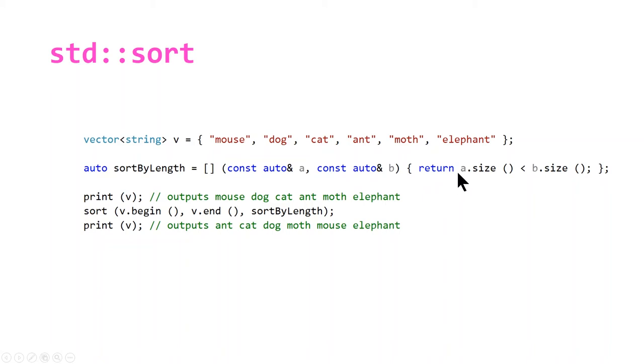By sorting based on size, it's going to sort from the smallest string in terms of length to the largest. We're still outputting mouse, dog, cat, ant, moth, and elephant at the beginning. But after sorting using this lambda expression, it outputs ant, cat, dog, moth, mouse, elephant, because elephant's the largest, and then moth, mouse, and these three could be interchangeable.